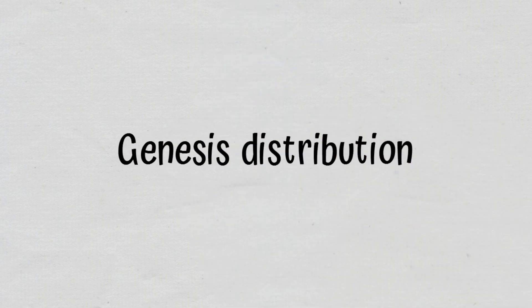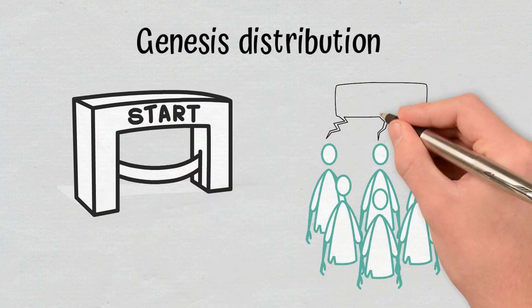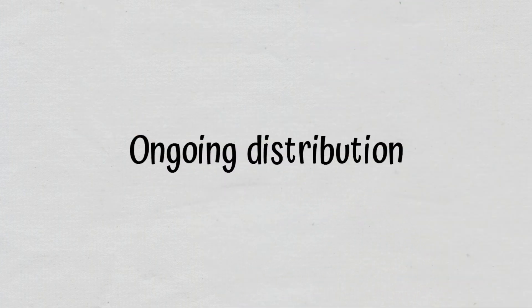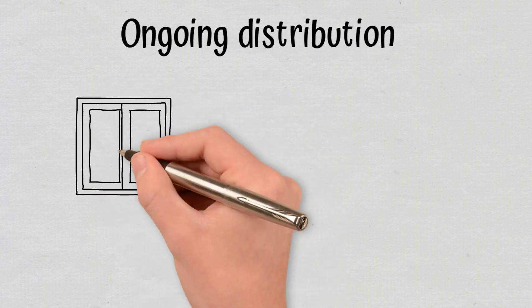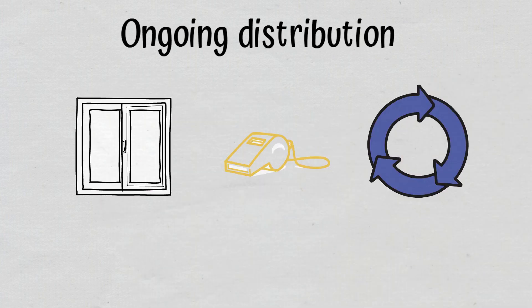Genesis distribution, which defines the starting conditions of a network, or simply put, who owns tokens and how many of them at network launch. And ongoing distribution, which is usually transparent, based on rules and continues throughout the network's functioning. It frequently subsidizes network operation elements.